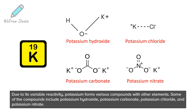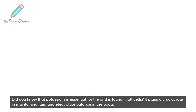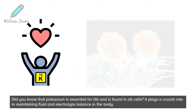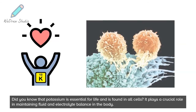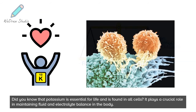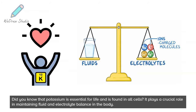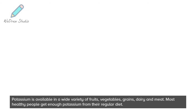Some of the compounds potassium forms include potassium hydroxide, potassium carbonate, potassium chloride, and potassium nitrate. Did you know that potassium is essential for life and is found in all cells? It plays a crucial role in maintaining fluid and electrolyte balance in the body.